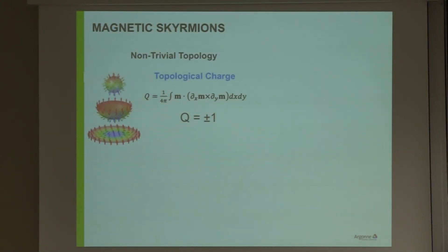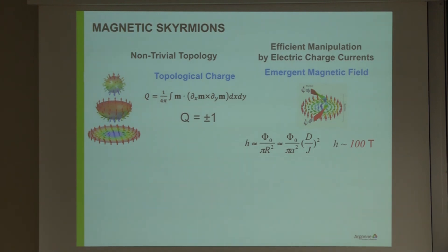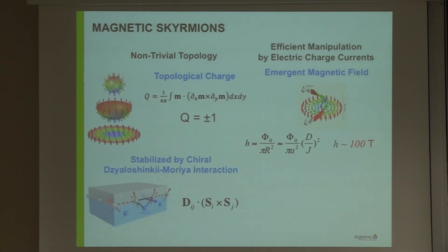Beyond the fundamental interest in skyrmions, they're also interesting because of their non-trivial topology. You can take the spins of a skyrmion and fold them back onto a single sphere — with the spins pointing inward or outward — and essentially if all the spins are on one single sphere you have a unitary topological charge. Additionally, if you look at electrons flowing across the skyrmion, they feel an emergent magnetic field that could be as much as a hundred Tesla, so this is not a small effect.